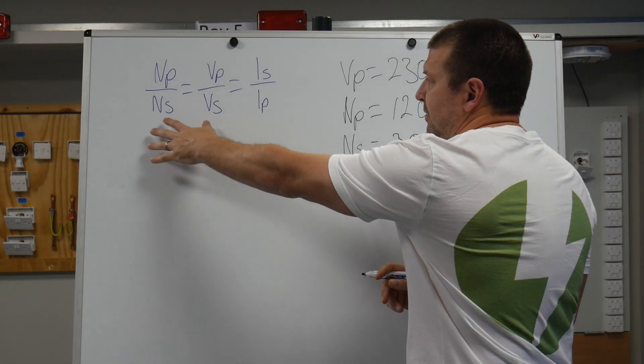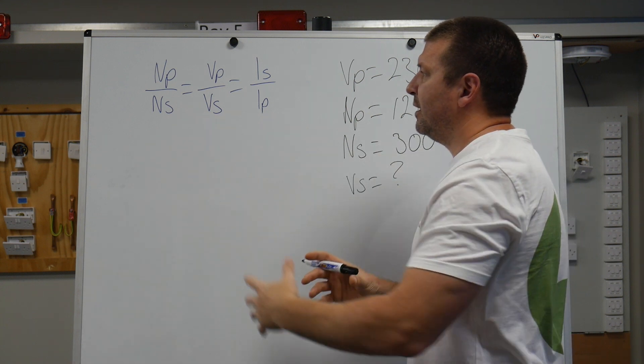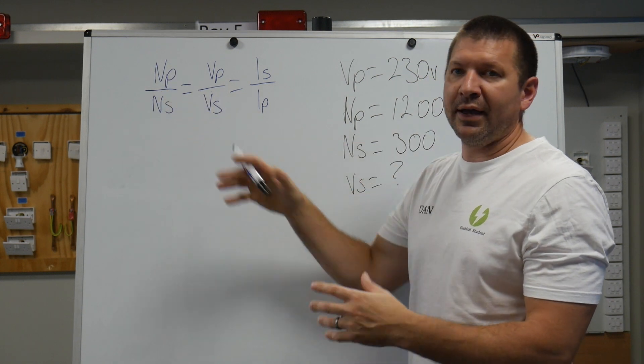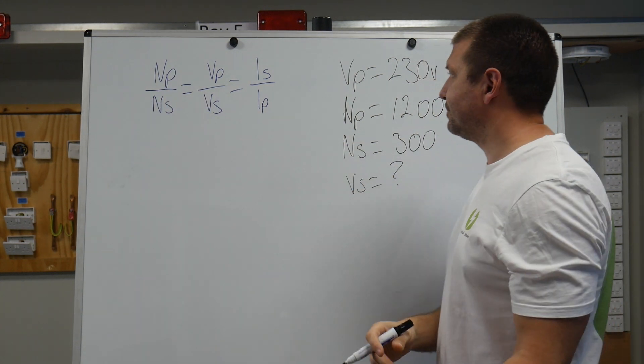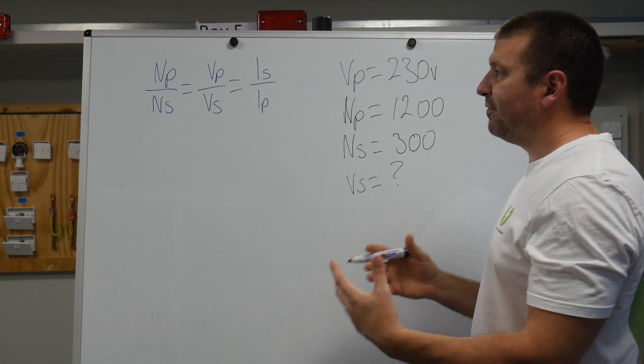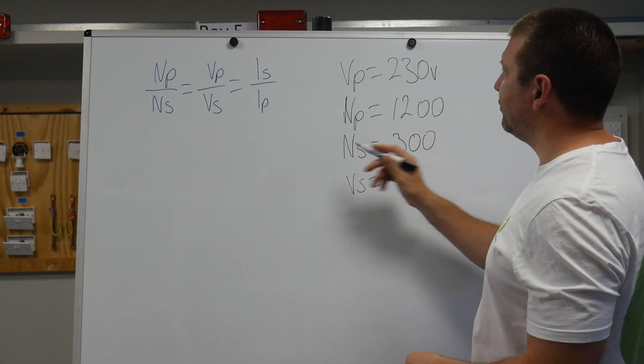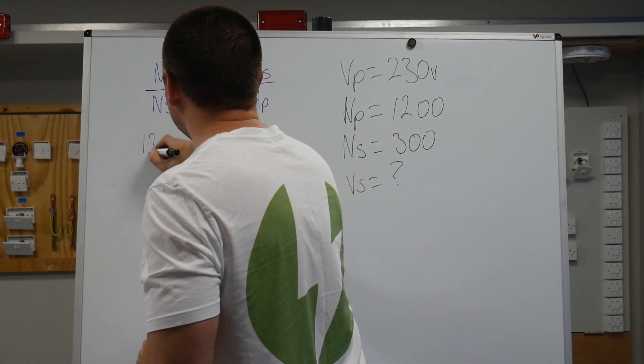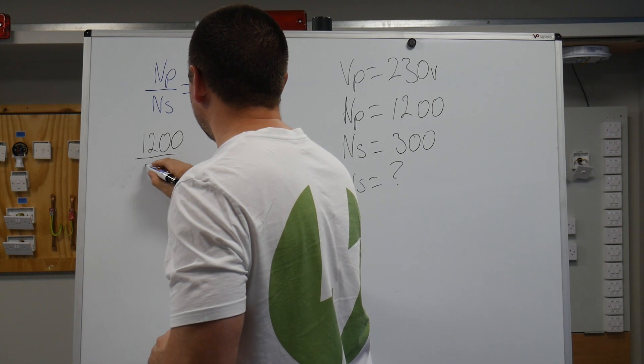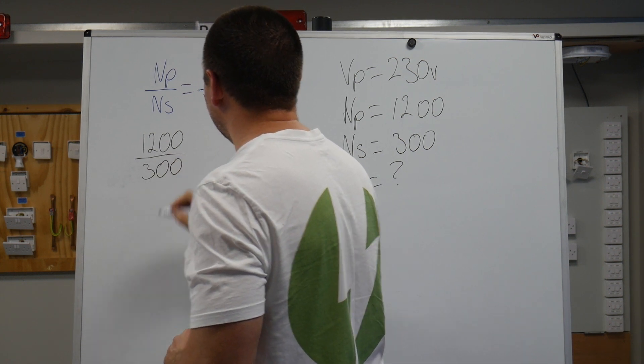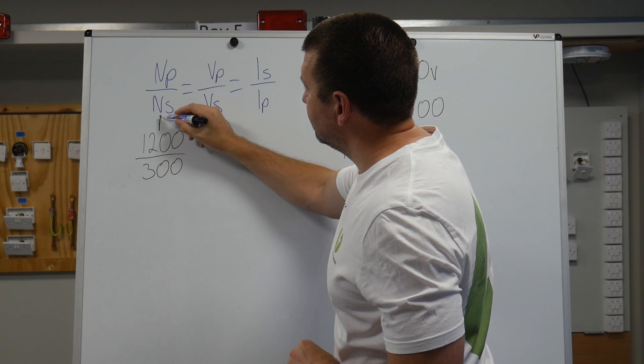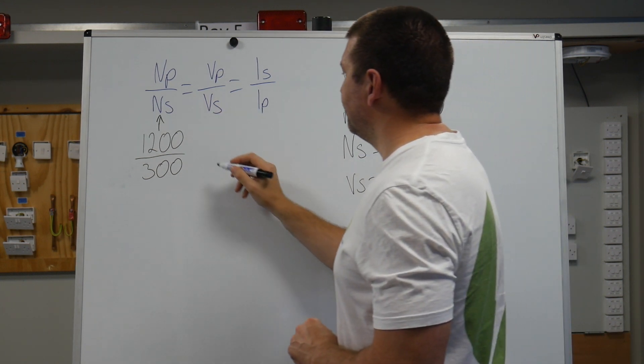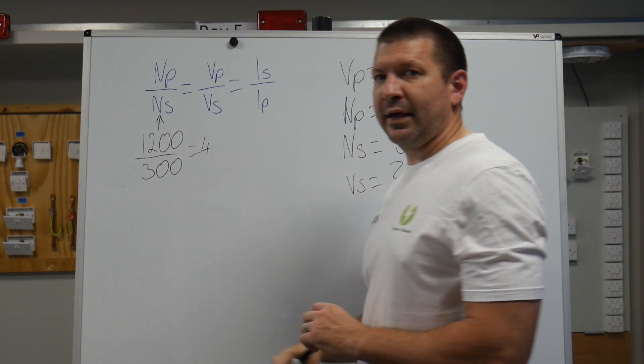What we're saying is a fraction, it's a math symbol. We're saying that if we did Np divide Ns, that equals a number. So let's find out what that number is for this. We've been given our two values. So 1,200 divide 300. That's this. Now I'd say that equals 4.